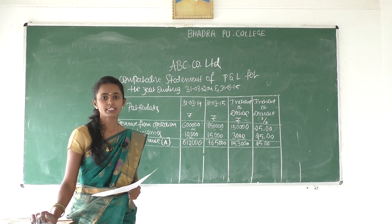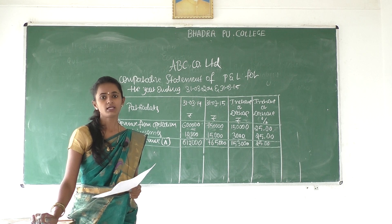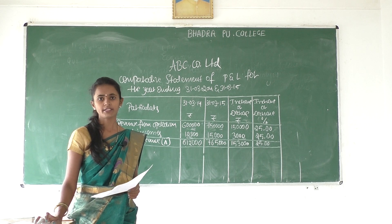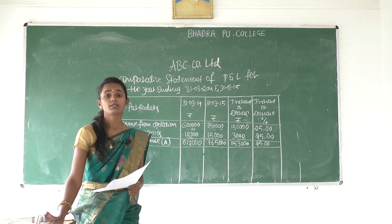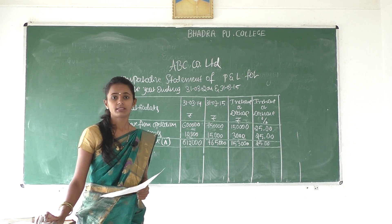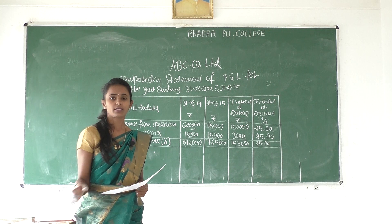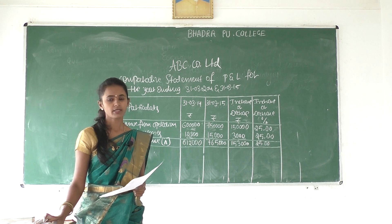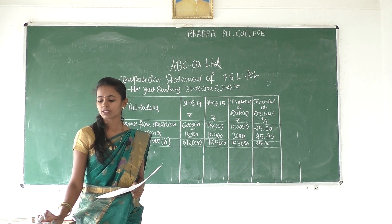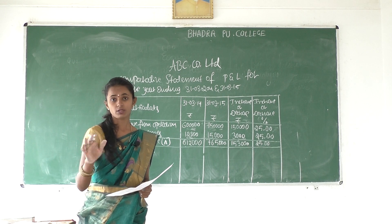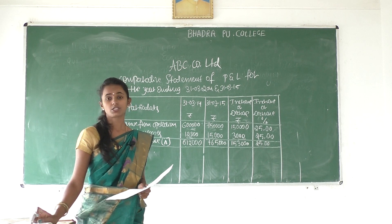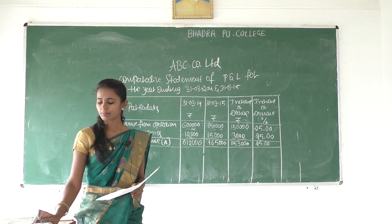Next money: employee benefit expenses — no more format later. Do you have that item? Employee benefit expenses — bit, bit. And the next one: finance cost. No more problem — finance cost — not given, so leave it. And the next one is depreciation and amortization. When you leave that problem, depreciation and amortization — cost of material — bit, bit, bit.